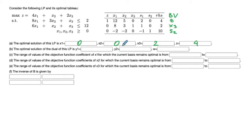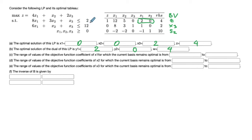Next, part b asks for the optimal solution of the dual. We read this from row zero — specifically from the columns corresponding to the slack variables. We get y1* = 2, y2* = 0, and the optimal dual objective value w* = 4, the same as the primal. The dual objective is 2y1 + 12y2, which equals four when we plug in this vector.